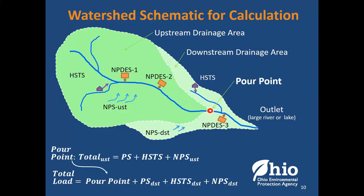The pour points are where it all hinges — that's where we have a high degree of certainty of the total mass of phosphorus and nitrogen being delivered. On the schematic, the orange squares represent NPDES — our permit system that Ohio EPA regulates for sources that discharge into the river: wastewater treatment plants and industrial sources. We also take into consideration HSTSs — home sewage treatment systems, your septic systems — which provide a more diffuse but known amount of nutrients. We also look at non-point source, which includes agricultural runoff, tile flow, urban stormwater, and all kinds of urban drainage.